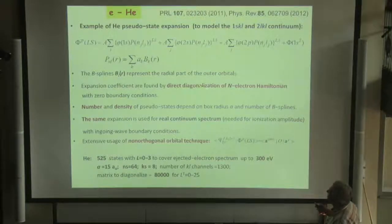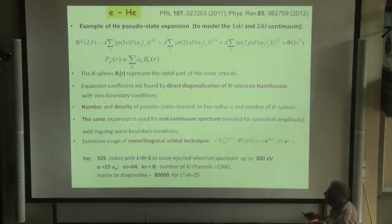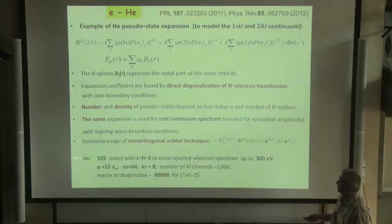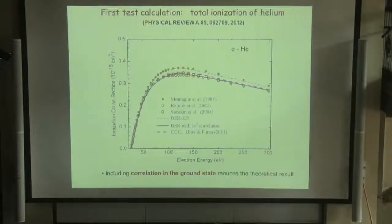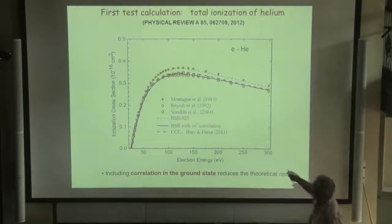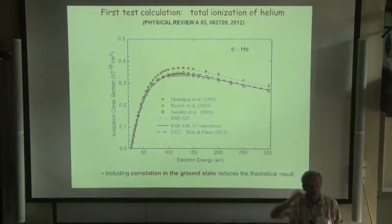Here, we obtain direct ionization, and what's important, the same expansion is used for the real spectrum when we use this projection technique. Now, here we included 500 states which cover the states up to 300 eV. Of course, first check for the total ionization cross-section. Here, we obtain very good agreement with the last CCC calculation and experimental data, including the 15% reduction in total cross-section with inclusion of correlation. But I believe we will talk about this also, so I better go to another process.